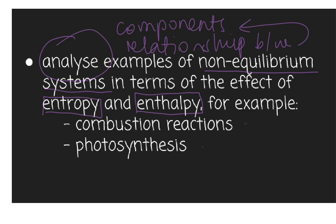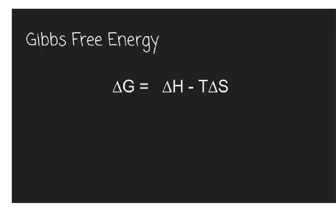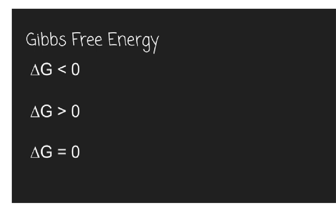We're going to have a chat about Gibbs law and review how that works. If we look at Gibbs free energy, we know that delta G, or change in Gibbs free energy, is equal to the change in enthalpy minus temperature times the change in entropy. A change in Gibbs free energy below zero — an enthalpy and entropy change at a particular temperature that gives us a negative result — is what we refer to as a spontaneous reaction.